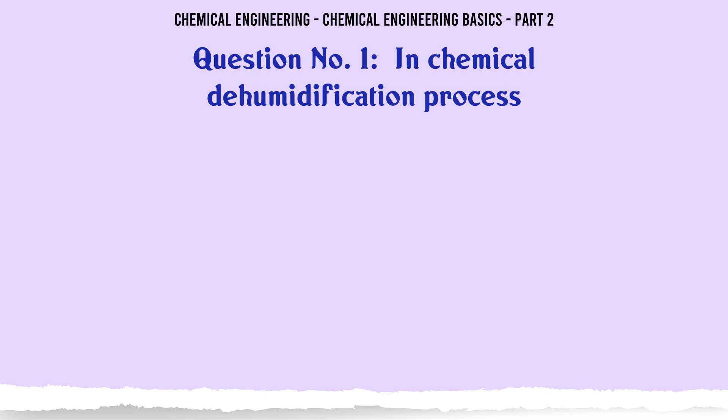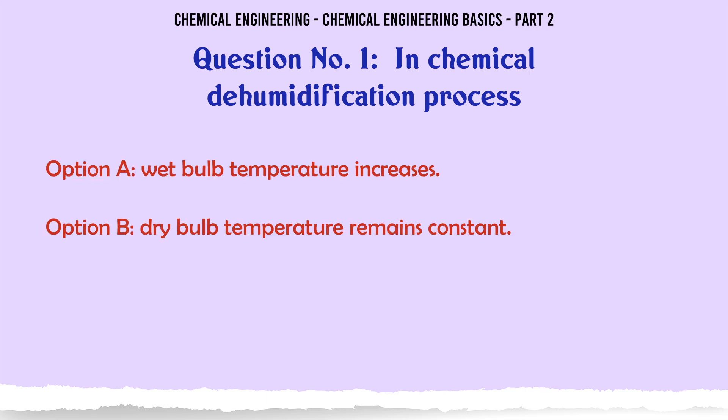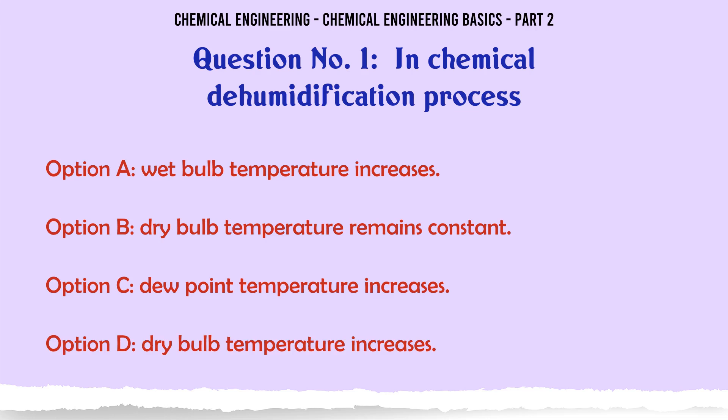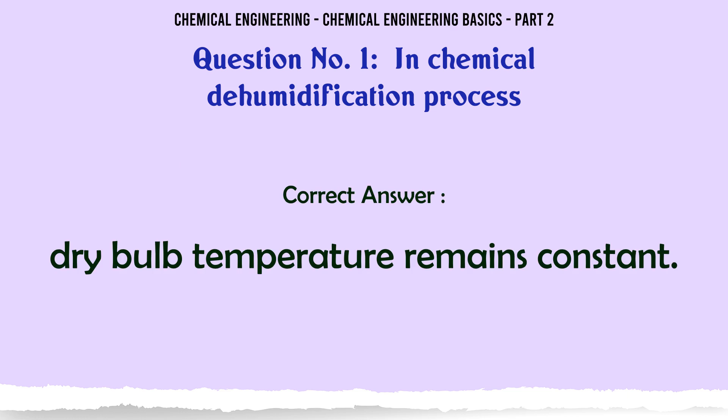In chemical dehumidification process: a) wet bulb temperature increases, b) dry bulb temperature remains constant, c) dew point temperature increases, d) dry bulb temperature increases. The correct answer is: dry bulb temperature remains constant.